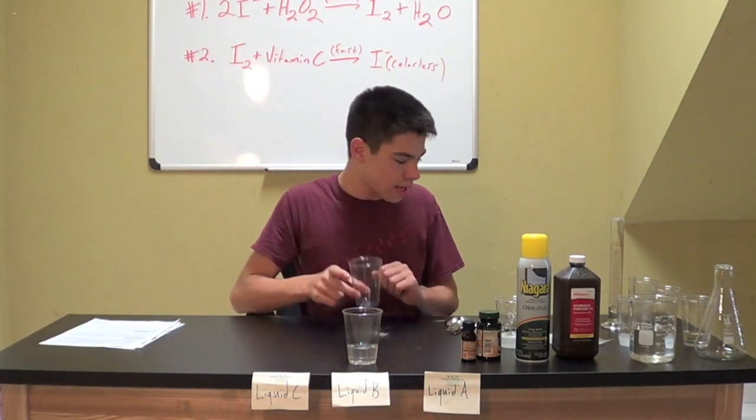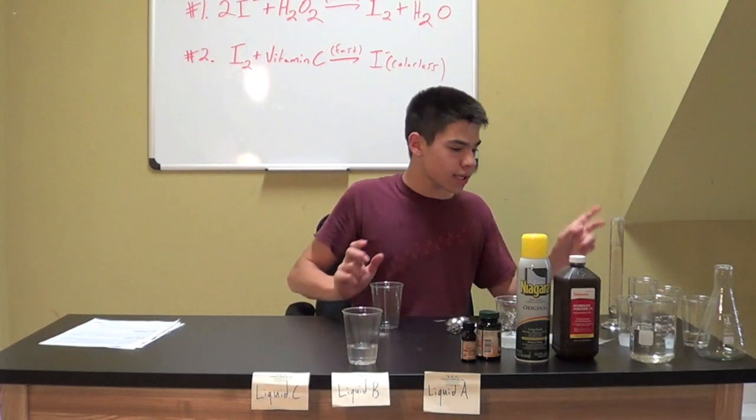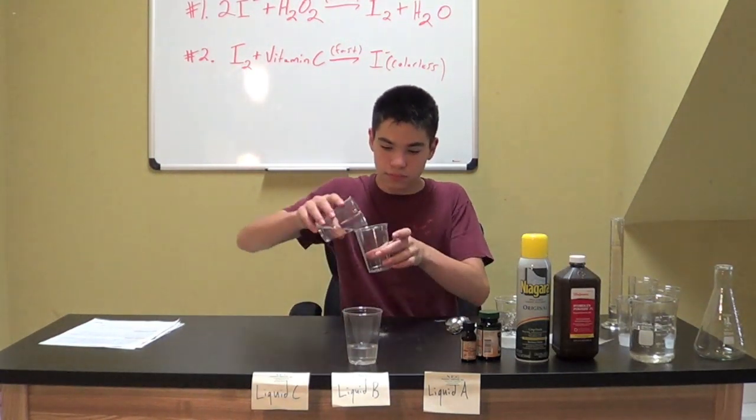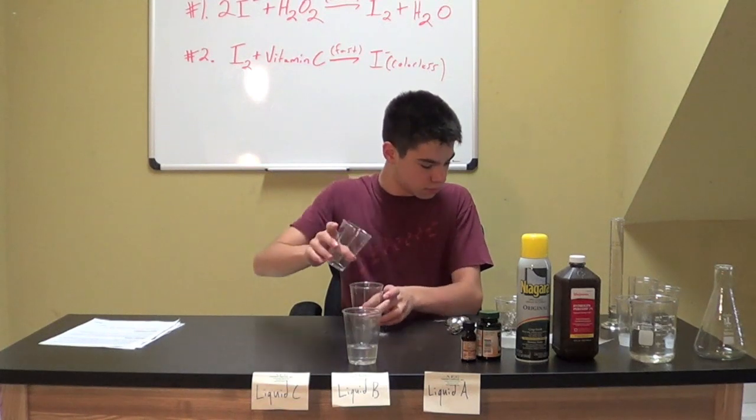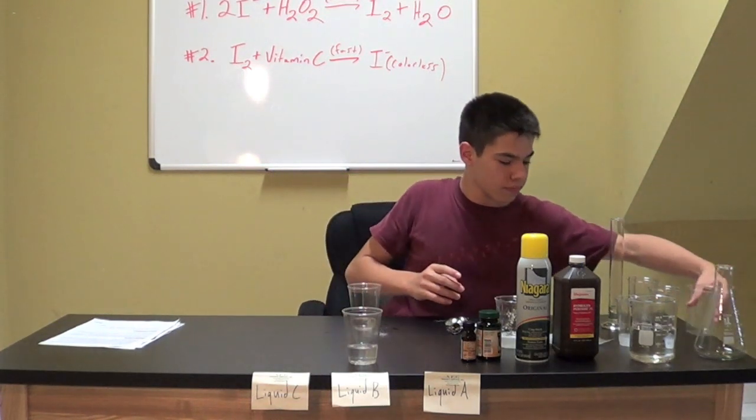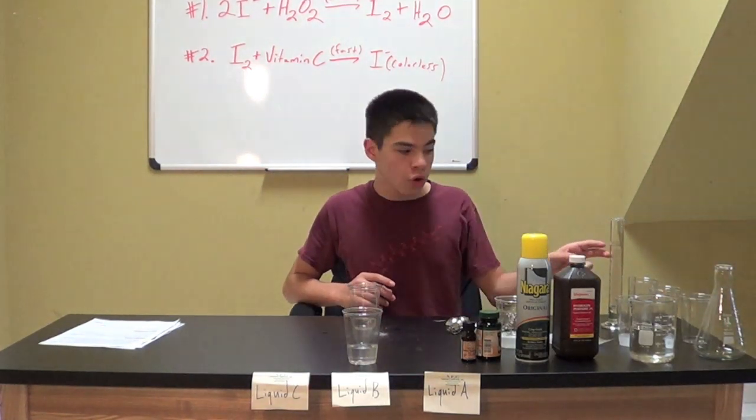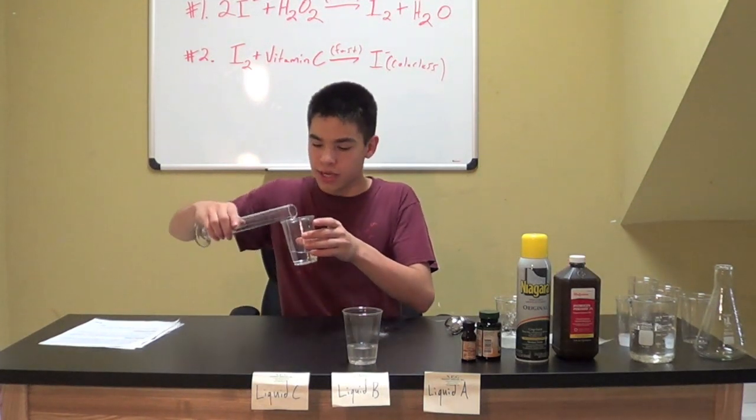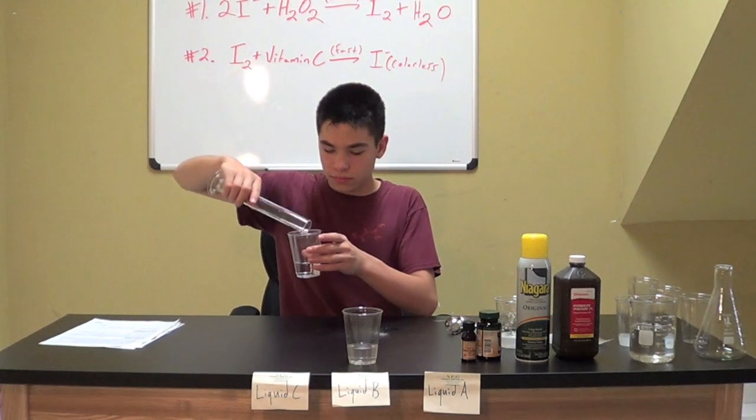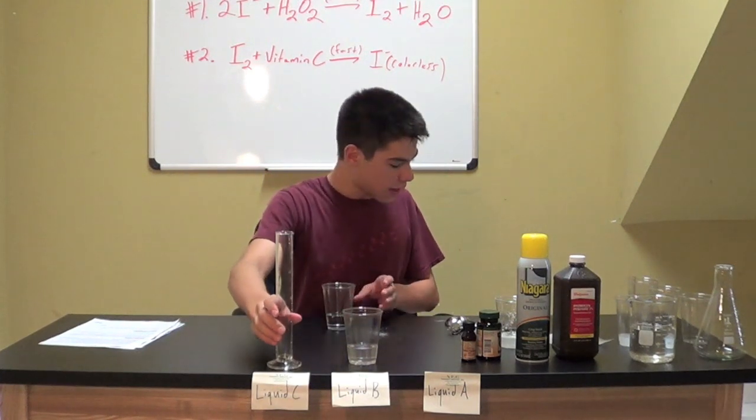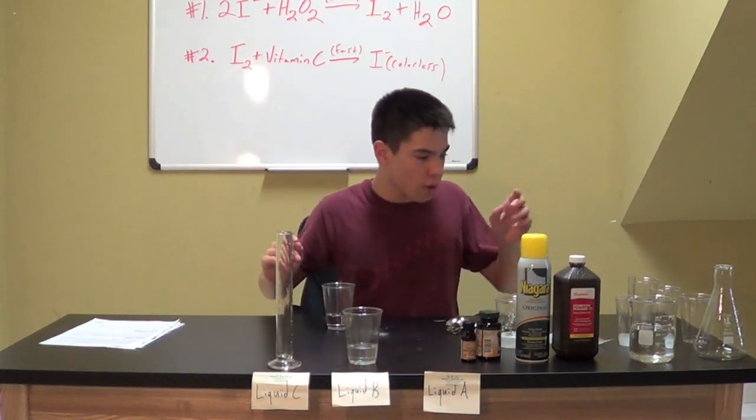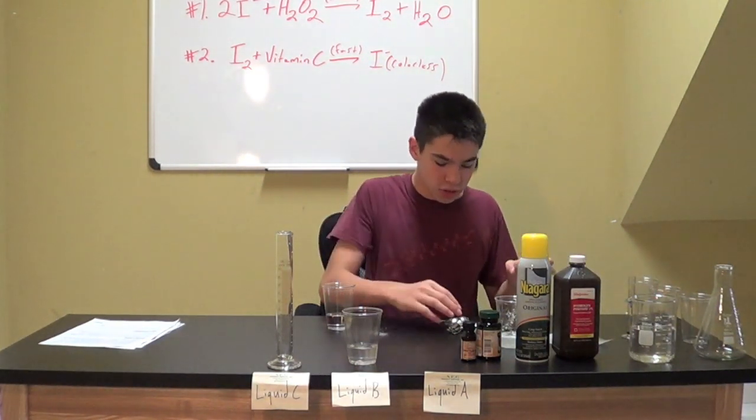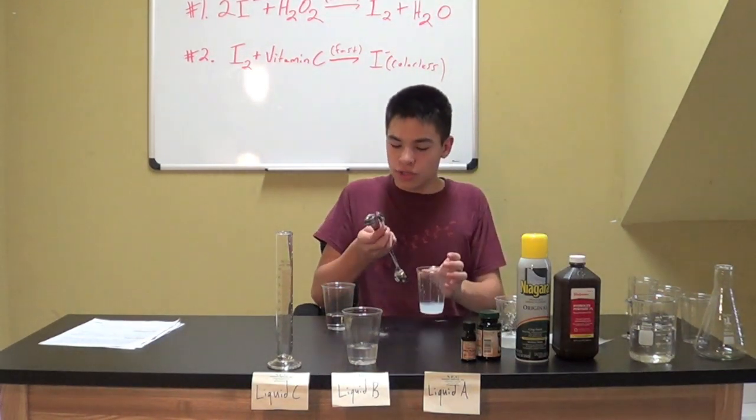Now, take your last cup and add to it 60 milliliters of lukewarm water. One tablespoon or 15 milliliters of your 3% hydrogen peroxide. And then add 1 half a teaspoon or 2.5 milliliters of your liquid laundry starch.